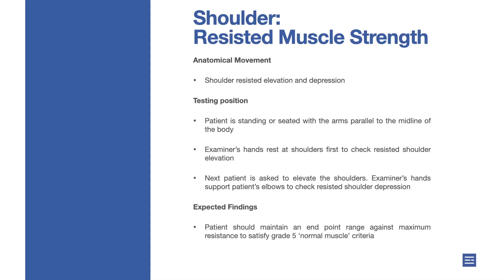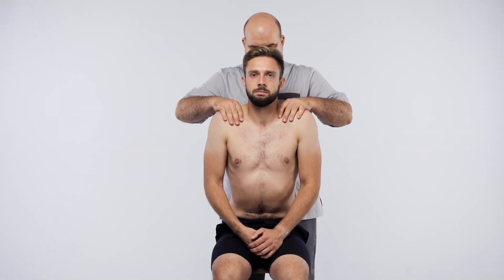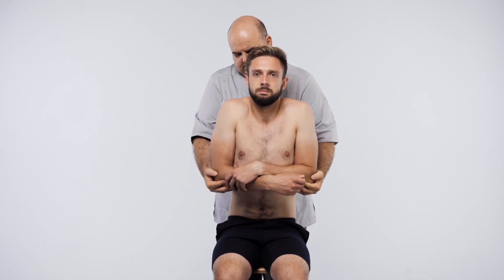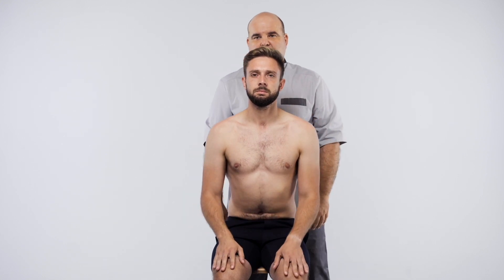Anatomical movement — shoulder resisted elevation and depression. Testing position: patient is standing or seated with the arms parallel to the midline of the body. Examiner's hands rest at the shoulders first to check resisted shoulder elevation; next, the patient is asked to elevate the shoulders. Examiner's hands then support the patient's elbows to check resisted shoulder depression. Expected findings: patient should maintain an end-point range against maximum resistance to satisfy grade 5 normal muscle criteria.